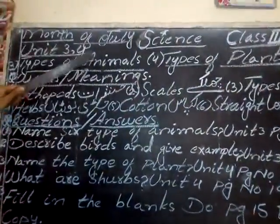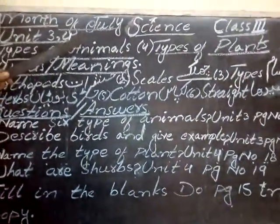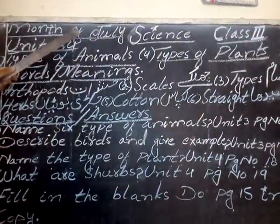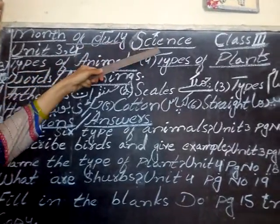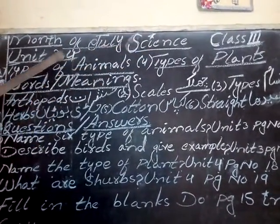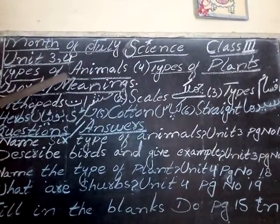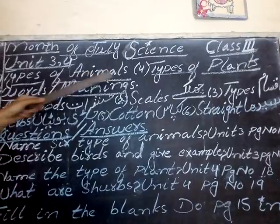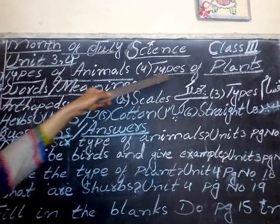Hello, my name is Myrtle and I'm your teacher Mr. Nida from J.V.S. Manuel English Secondary School. Month of July science class, unit number 3 and 4: types of animals and different types of plants for the exam.